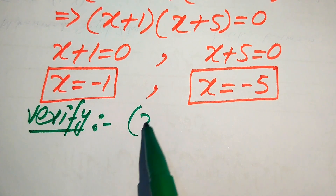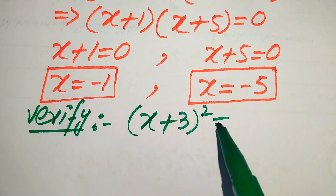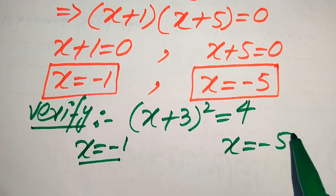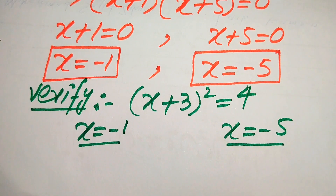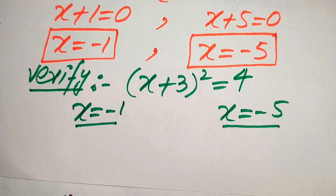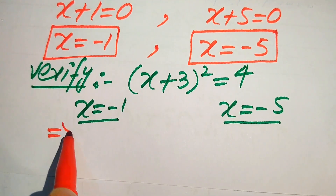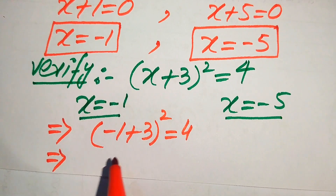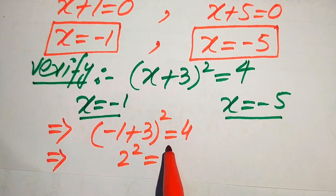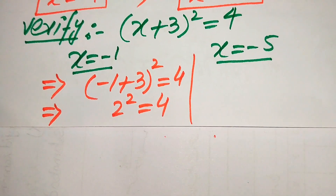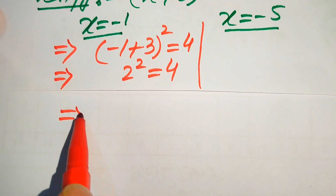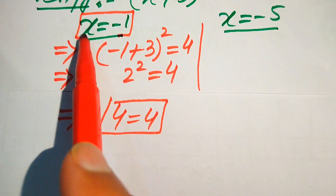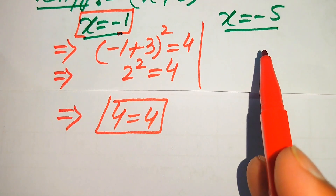We copy down the given equation: (x + 3)² = 4. To verify x = −1, we substitute into the left-hand side: (−1 + 3)² = (2)² = 4. Since 4 = 4, the value x = −1 satisfies the given equation and is a valid solution.